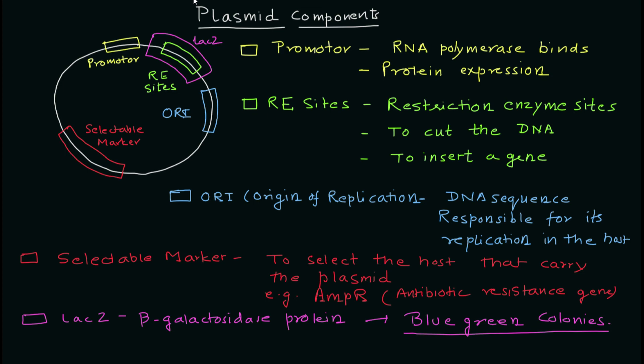There will be non-functional protein expressed, so the cloning will indicate that the Lac Z gene is disrupted. That is why you're going to have white colored colonies.